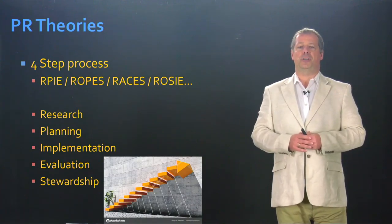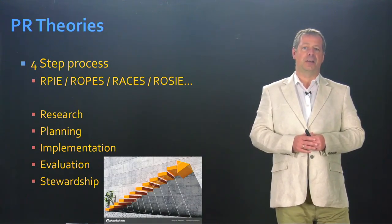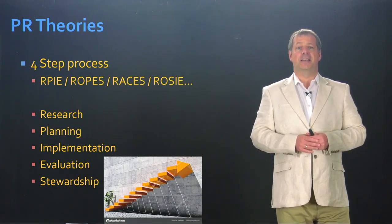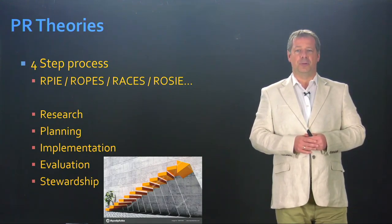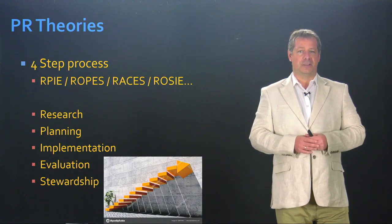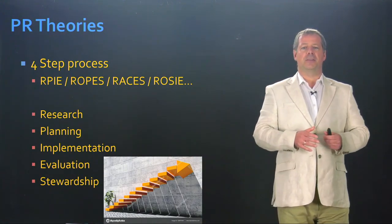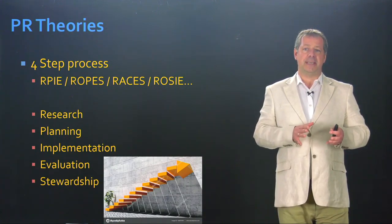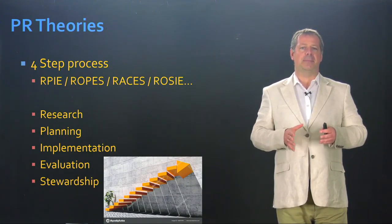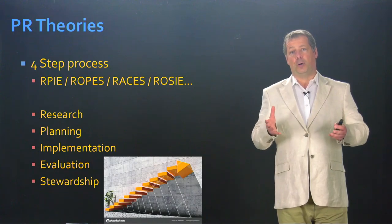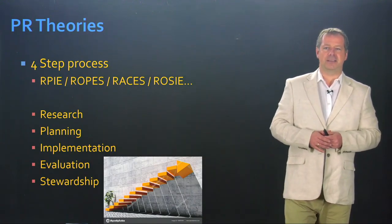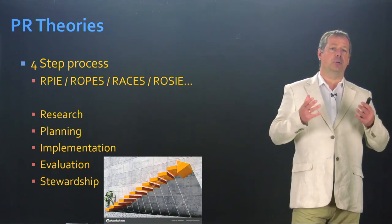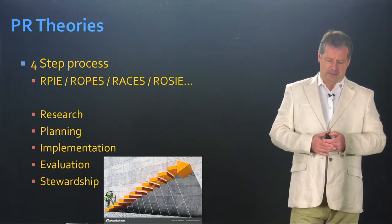ROPES: Research, Objective, Planning, Evaluation, Stewardship. RACES: Research, Action, Communication, Evaluation, Stewardship, and so on and so forth. So there are a lot of different acronyms, but no matter what acronym, you see they all talk about the same steps, the same four or five steps, whether you add stewardship at the end or not. They just have different names for the steps in order to create an acronym.